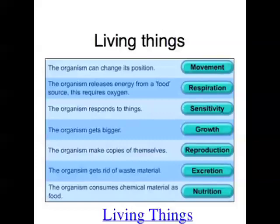All living things perform cellular respiration, which is basically the way that living things get the energy they need to survive. They all respond to stimuli in their environment — touch, smell, light, or gravity, depending on the organism. They all grow, they all reproduce and make more living things, they all excrete some waste materials they don't need anymore, all living things obtain nutrition to enable them to live and grow, and importantly, all living things are composed of cells.